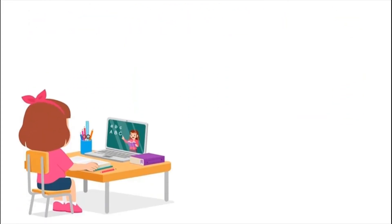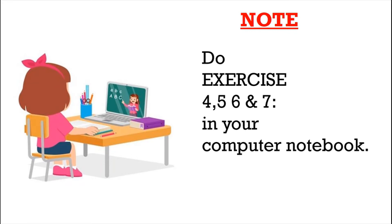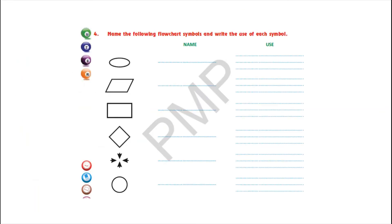Now I request all of you to do the next exercises — that is 4, 5, 6, and 7 — in your computer notebook. This is exercise number 4: Name the following flowchart symbols and write the use of each symbol. So children, open your computer notebook and let's begin.